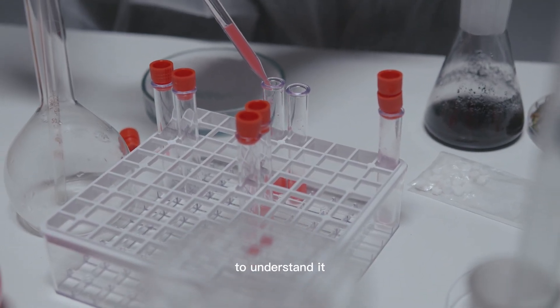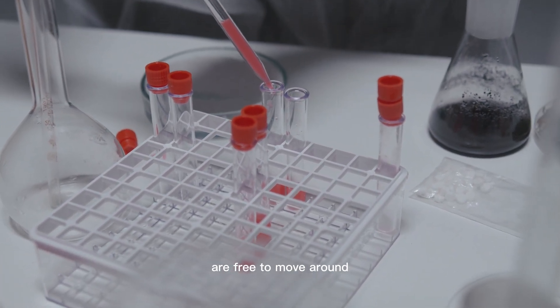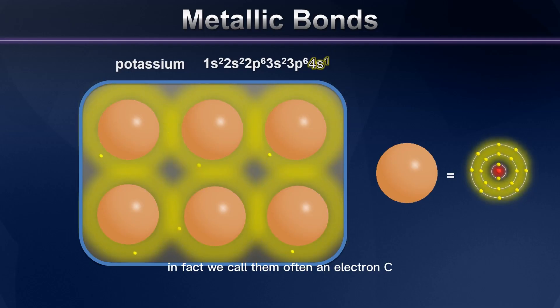To understand it, we need to remember that the electrons in a metal, unlike a semiconductor, are free to move around like a liquid. In fact, we call them often an electron sea, where they always try to flow away from areas of like charge and towards areas of opposite charge, because opposites attract.